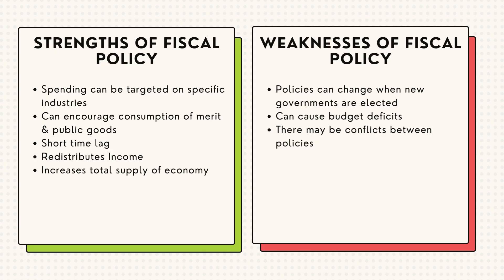What are the strengths and weaknesses of fiscal policy? Fiscal policy has some strengths like there is a short time lag, it helps to redistribute income, it increases the total supply of the economy, and spending can be targeted on specific industries. It can also encourage consumption of merit goods and public goods. However, policies can change when new governments are elected. Implementing fiscal policy may cause a budget deficit due to high government spending, and there may also be conflicts between policies.